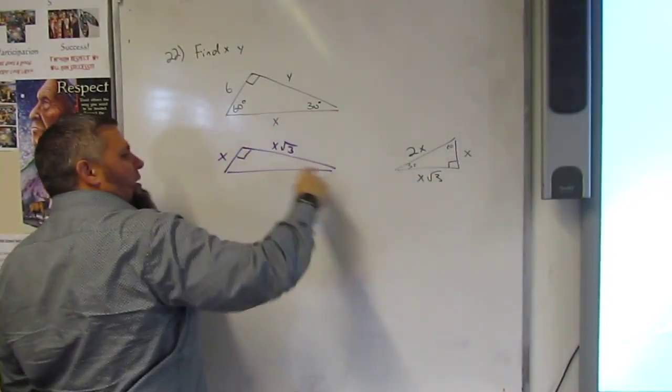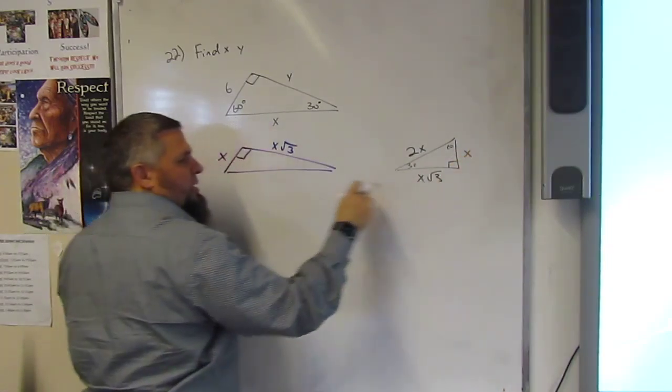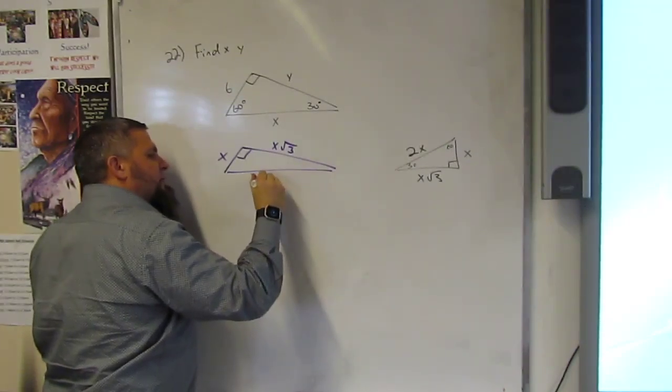So it's flipping over. This is becoming on top. They make your perpendicular. Your hypotenuse is 2X.